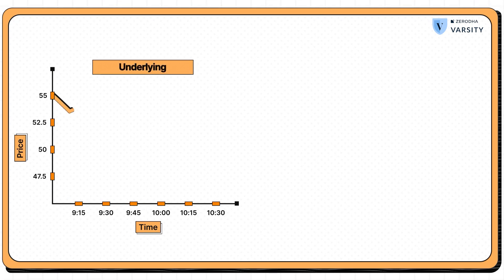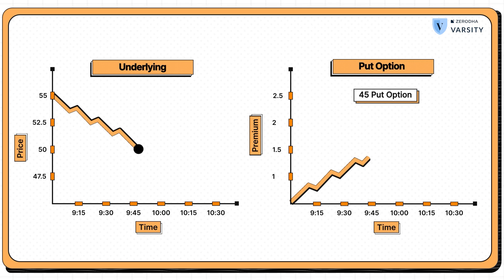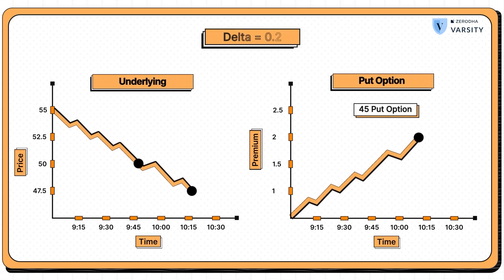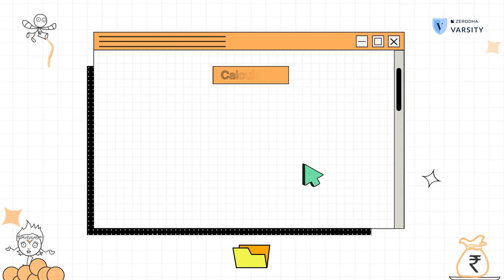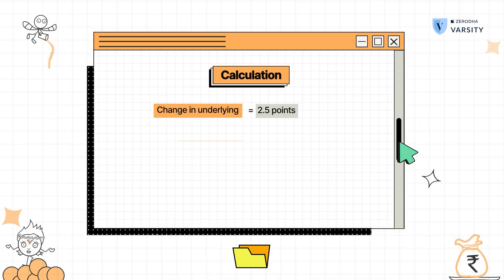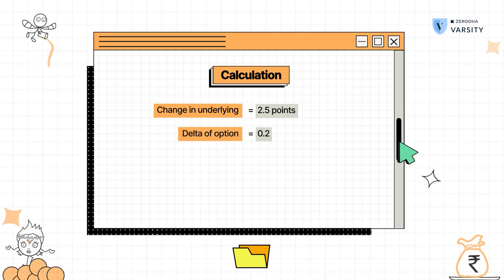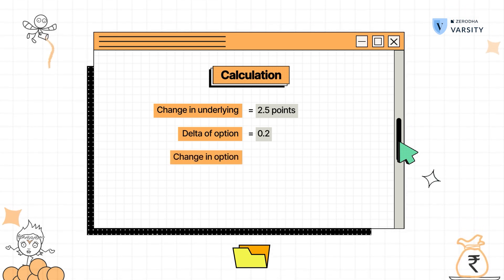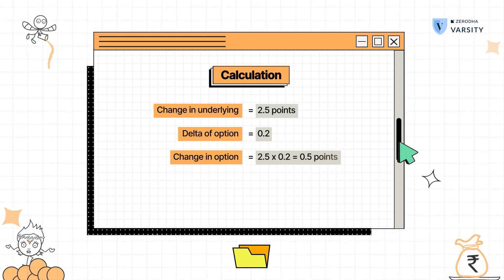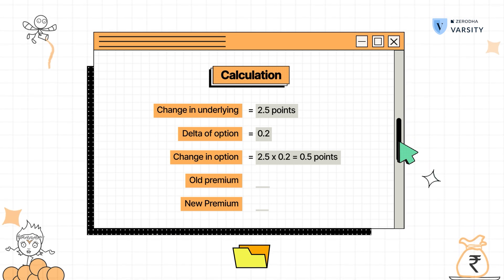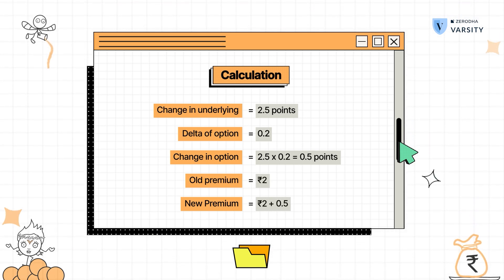Let's take the example of a put option. Assume that there is an underlying trading at 50 rupees. There is a put option at 45 trading at 2 rupees. As a trader, you expect a 5% fall in this underlying, or 2.5 points. Assuming the delta of this option is 0.2, what is the new premium after the underlying falls by 5%? For every one point fall in the underlying, the put option increases in value to the extent of delta, which is 0.2. We expect a total decline of 2.5 points. Therefore, the change in premium is 2.5 into 0.2, which is 0.5. Therefore, the new premium is the old premium of 2 rupees plus 0.5, giving a new premium of 2.5 rupees.